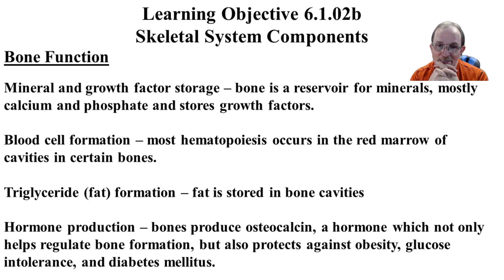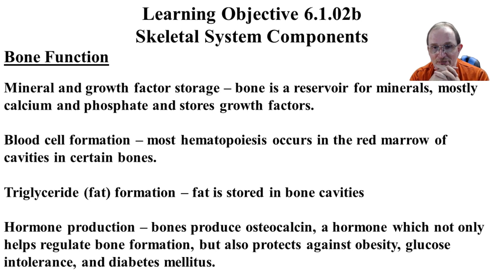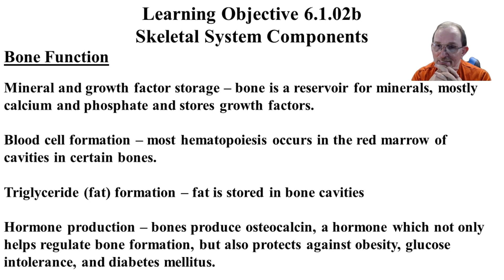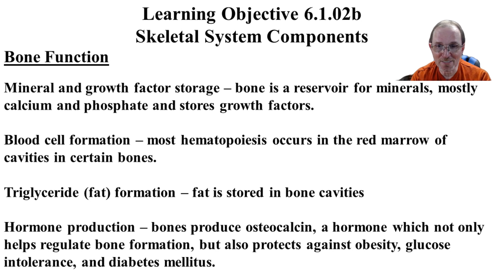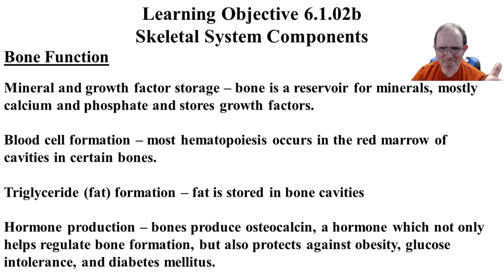In children and infants especially, they have to make a lot of blood — not only to replace what wears out (red cells last about four months on average) but also because they're still growing. For adults, we only have to replace what we lose. So a lot of our bone marrow stops being red marrow for blood cell production and becomes yellow marrow, which is fat storage. We have both yellow and red marrow.